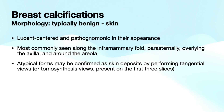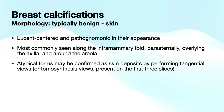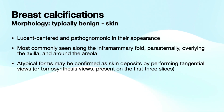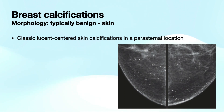We're going to talk about typically benign calcifications related to skin calcifications. These are lucent-centered and pathognomonic in their appearance. They're most commonly seen along the inframammary fold, adjacent to the sternum, overlying the axilla, and around the areola. Atypical forms of skin calcification — maybe in an unexpected area or without a pathognomonic lucent-centered appearance — can be confirmed to be within the skin by performing tangential views. With modern tomosynthesis views, if a calcification is present within the first three slices, it can be considered to be in the skin. This is an example of classic lucent-centered calcifications in a parasternal location on both sides — multiplicity, bilaterality, and a pathognomonic benign appearance are all reassuring, and a BI-RADS 2 code can safely be assessed with no further follow-up required.